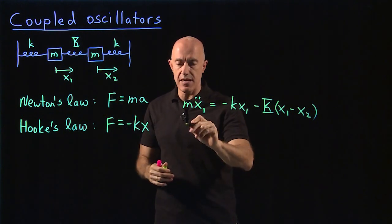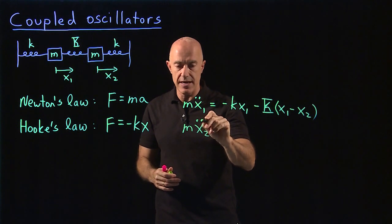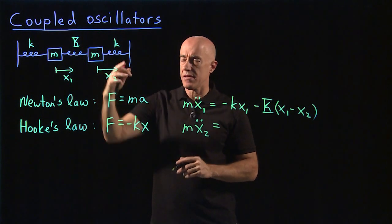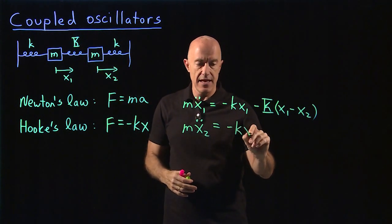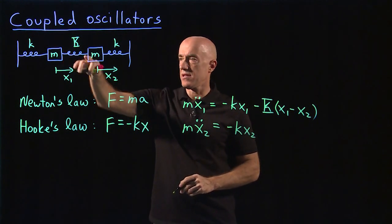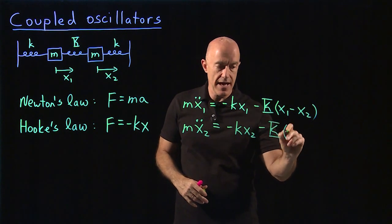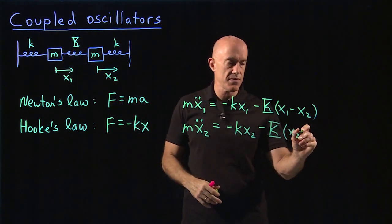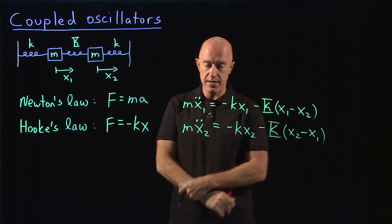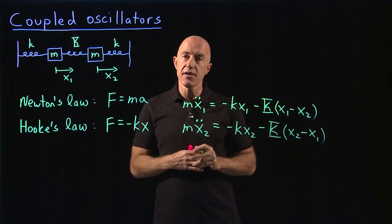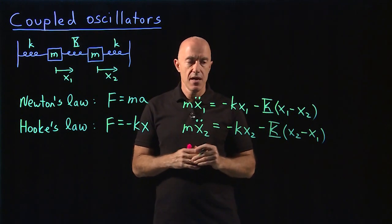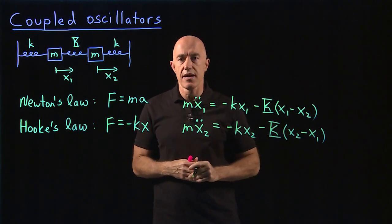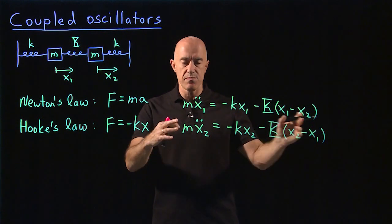Again, we do the same equation for the second mass, mx2 double dot. We have the spring all the way on the right is just Hooke's law minus kx2. The spring on the left would be minus capital Kx2. But we have to take into account that that middle spring is also connected to the first mass. So minus x1. This is our system of differential equations. They're second order instead of first order. But they're also linear and homogeneous, like the situation we've been solving previously.